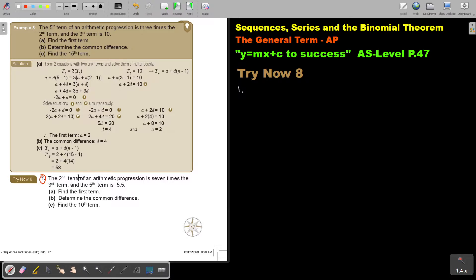Number one. The second term of an AP is seven times the third term. Okay, so it's seven times the third term. And the fifth term is negative 5.5. Okay, again, I'm just going to draw a line again there, just to help me.